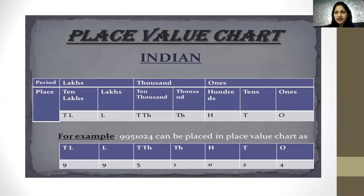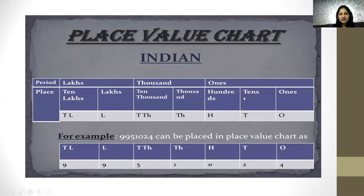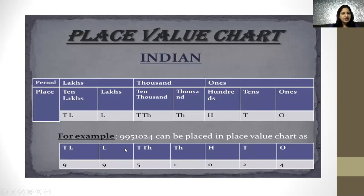As you have already done in fifth form, there are two place value charts — Indian and International place value charts. In the Indian place value chart, there are three places in the ones period, two places in the thousands period, and two places in the lakh period. For example, in 9,951,024: 024 comes in the ones period, 51 comes in the thousands period, and 99 comes in the lakh period.